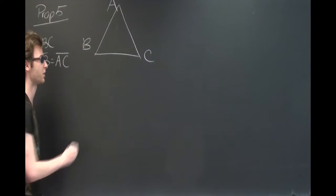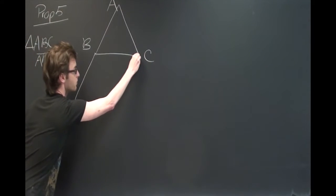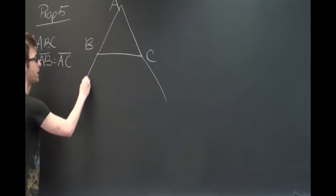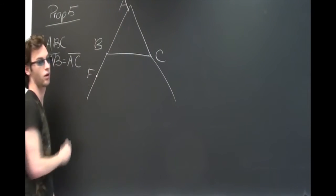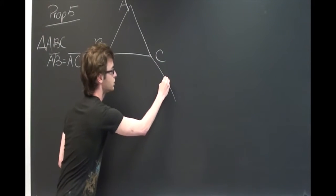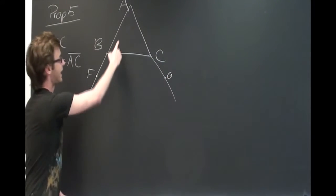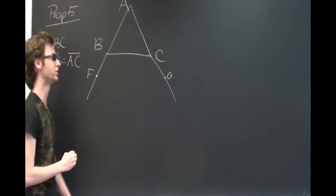Next, we will extend the legs further down, and take a point F somewhere along, and take another point G, such that AF will be equal to AG.